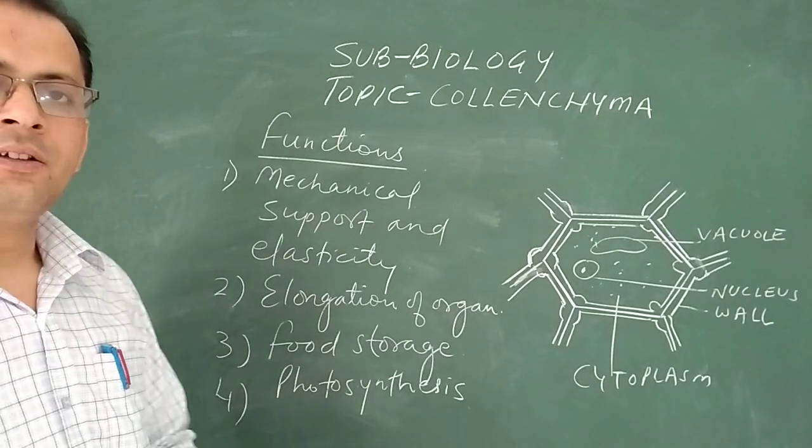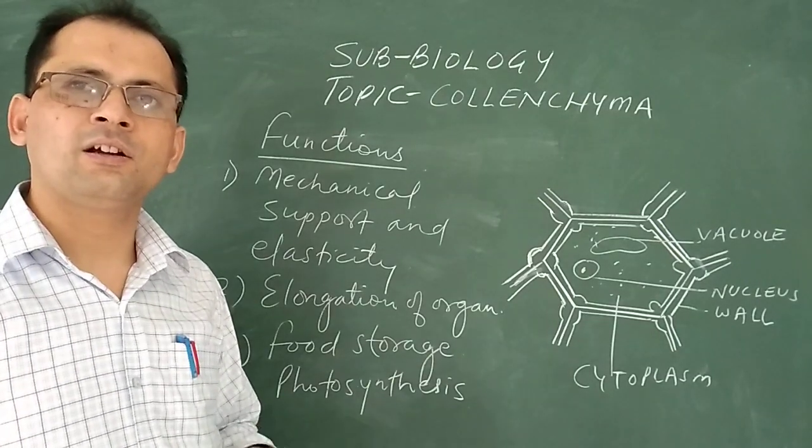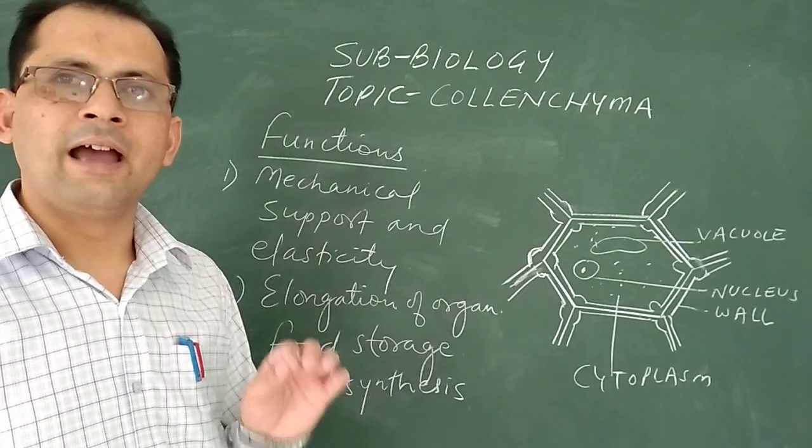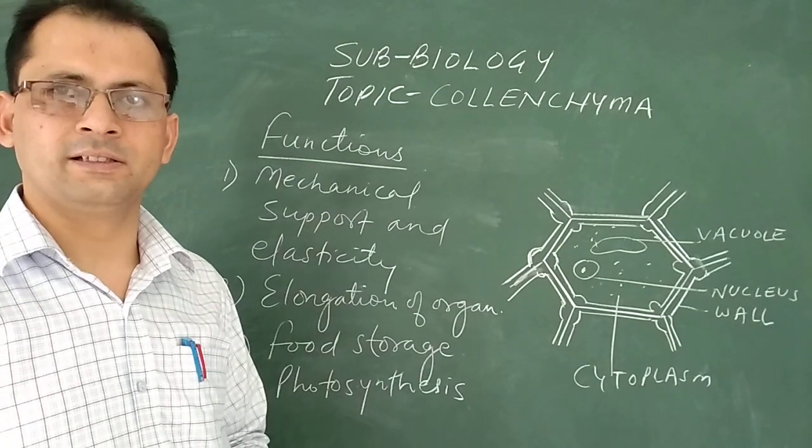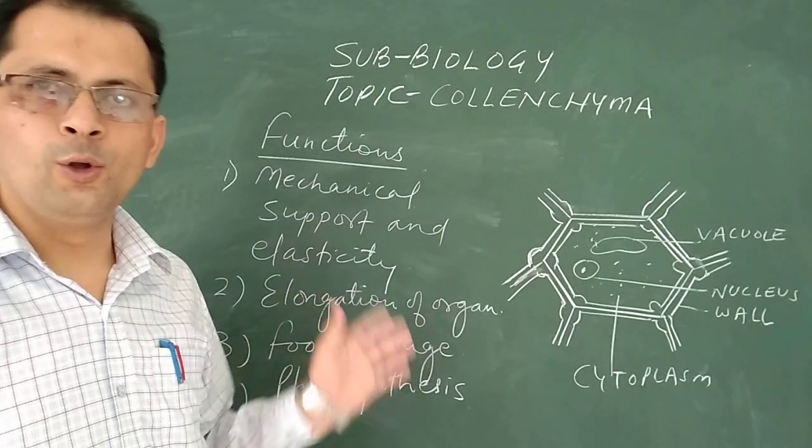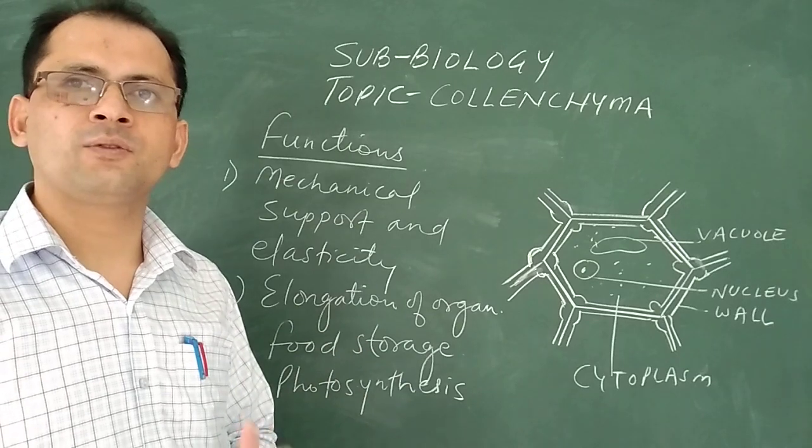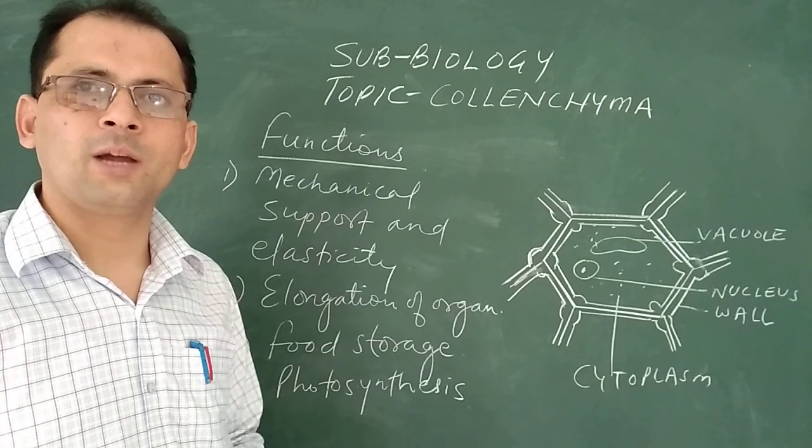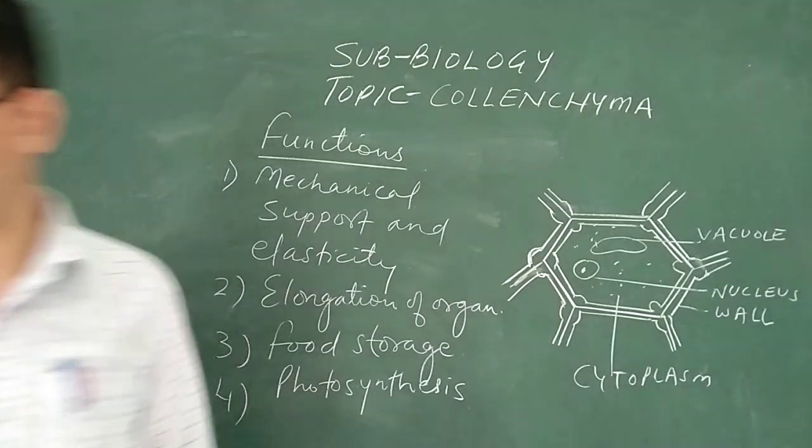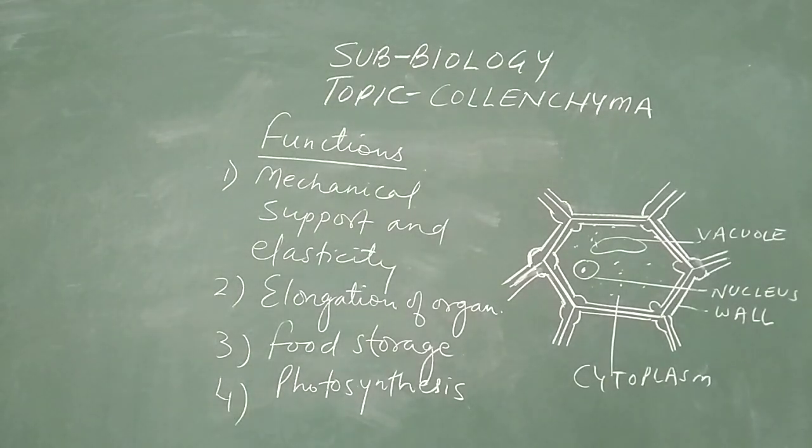And fourth is when collenchyma cells contain chlorophyll they help in performing the process of photosynthesis. So I told you about the general characters of the collenchyma tissue as well as the functions which are performed by the collenchyma tissue. Thank you.